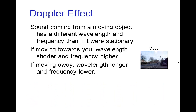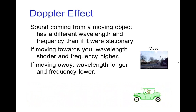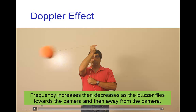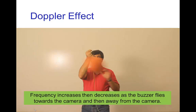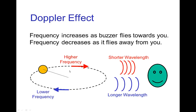When the source of sound is moving towards you, the wavelength is shorter and the frequency is therefore higher. When the source of sound is moving away from you, the wavelengths are stretched out and the frequency is lower. You can hear a variation in the pitch of a buzzer going up and down as it moves towards and then away from you. As the buzzer moves towards you, the waves pile up — shorter wavelength, higher frequency. When moving away, the waves are stretched out — longer wavelength, lower frequency.